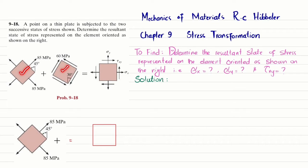You can see these are the two successive states of stress, and we have to show that the sum of these two will be equal to the resultant. We will find sigma x, sigma y, and tau xy. Let's start with the solution. We will name this case A and this case B.